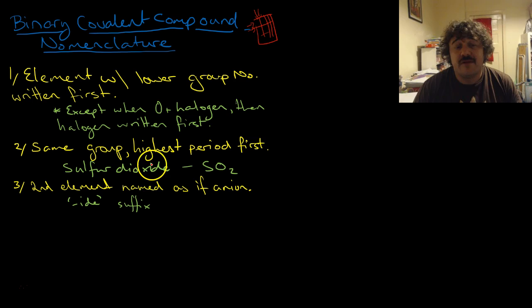It is the same group. If it's in the same group, you write the highest period first. So you've got this one here and this one here. You'd write that one there first. That is the highest period. The second element in the binary compound gets the suffix "-ide." So it's named as if it's an anion.